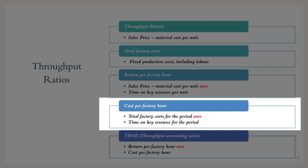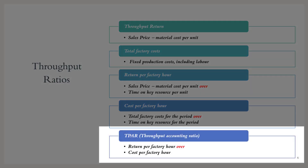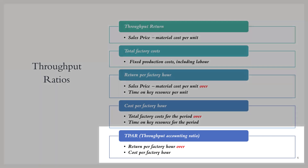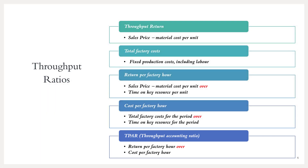The cost per factory hour is calculated as the total factory costs for the period over the time on the key resource for the same period — done on a total basis, whereas return is done on a per unit basis. The return per factory hour divided by the cost per factory hour is called the throughput accounting ratio. For a product to be viable — effectively profitable — in throughput terms, that ratio needs to be greater than one. All these formulas need to be learnt; they are not given to you on the exam formula sheet.